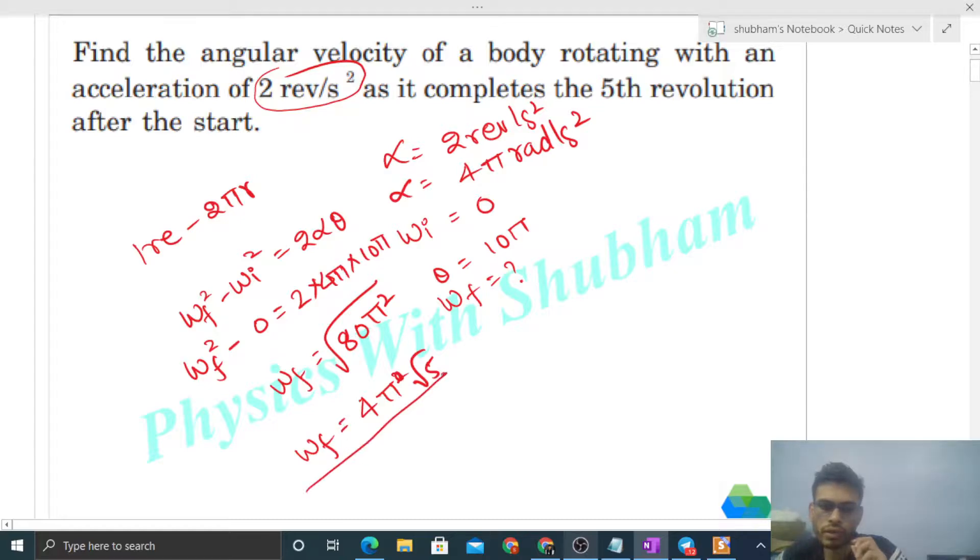If you want it in revolutions per second, you can divide it by 2π, so that will be 2 under root 5 revolutions per second. This is the value of final angular velocity.